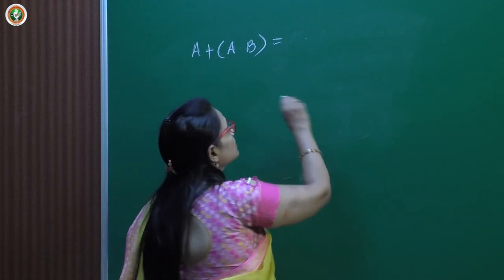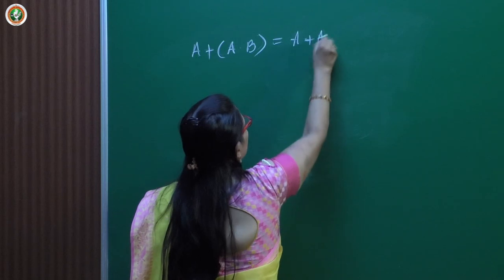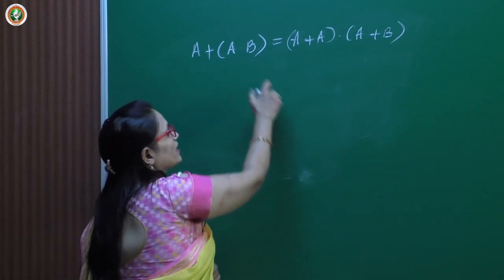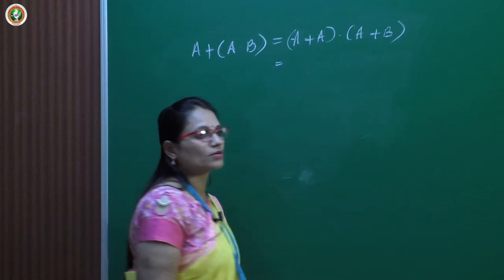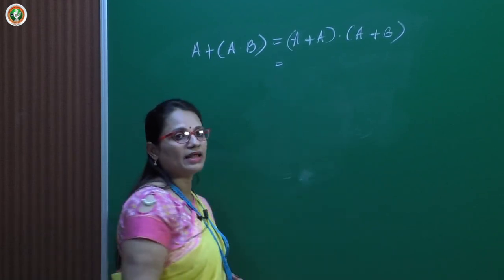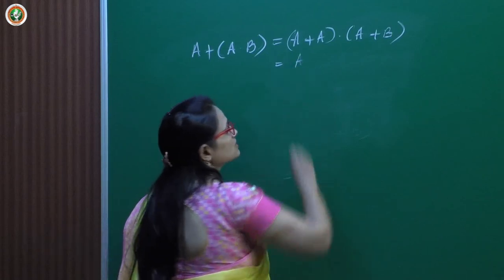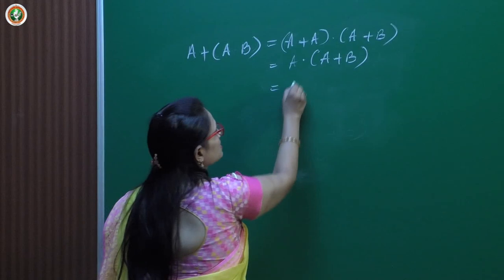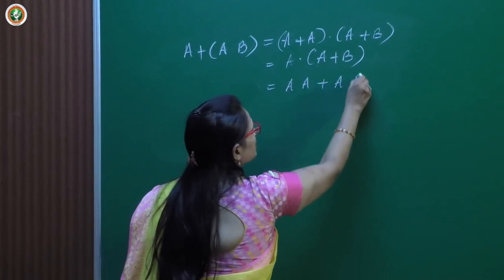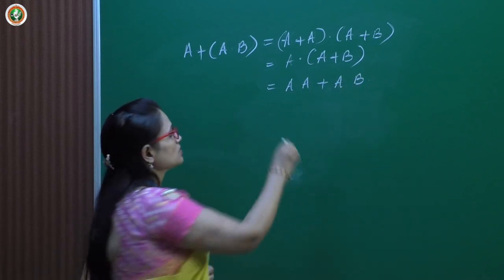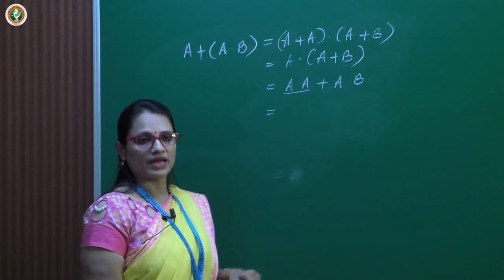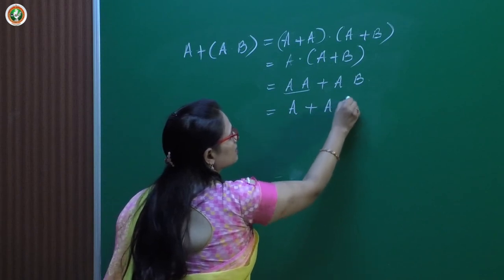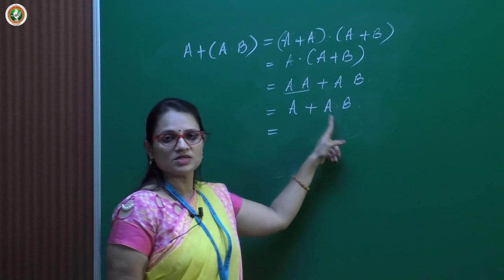According to the distributive law I can expand this expression. Now we know that according to the idempotent theorem, A plus A — anything OR'd with itself — is going to give us the same value. Again if I expand this I will be getting A into A plus A into B using the distributive law. According to the idempotent theorem, A into A — anything AND'd with the same value — produces the same value, so this will be simplified. Now in both terms I have a common value A.